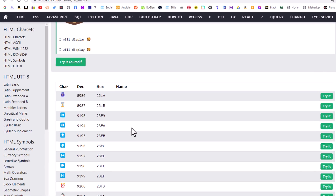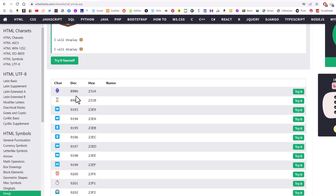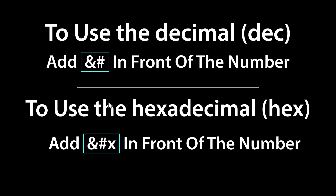The way that you add emojis — this top one here is an emoji of a watch. Next to it, it has a decimal number. You could either use the decimal number or the hex number. To use a decimal number, you add the ampersand and the pound symbol in front of it. For a hexadecimal number, it's very similar, except you add the ampersand, the pound symbol, and a lowercase x in front of the hex number.